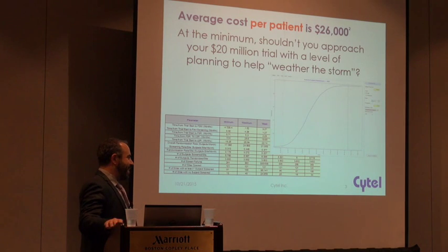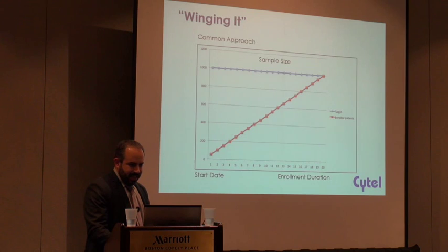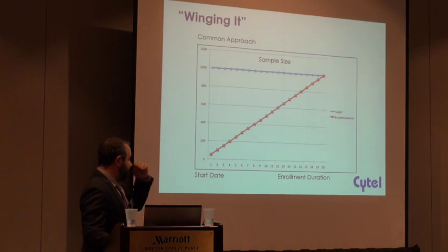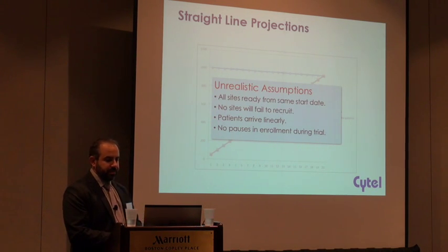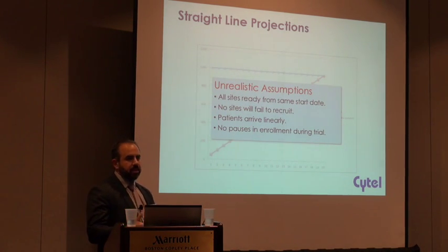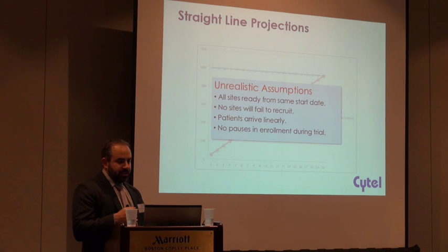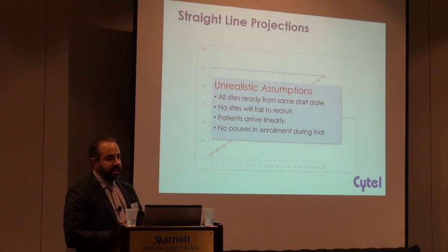You can throw in the recruitment aspect too — we're just talking about the enrollment planning piece. So this is what I call winging it. This is the common approach: a straight-line projection, and it's an unrealistic assumption for a number of reasons. This assumes all sites are ready for the same start date, that no sites will fail to recruit, that all patients arrive in a linear fashion, and that there are no pauses in enrollment during the trial.